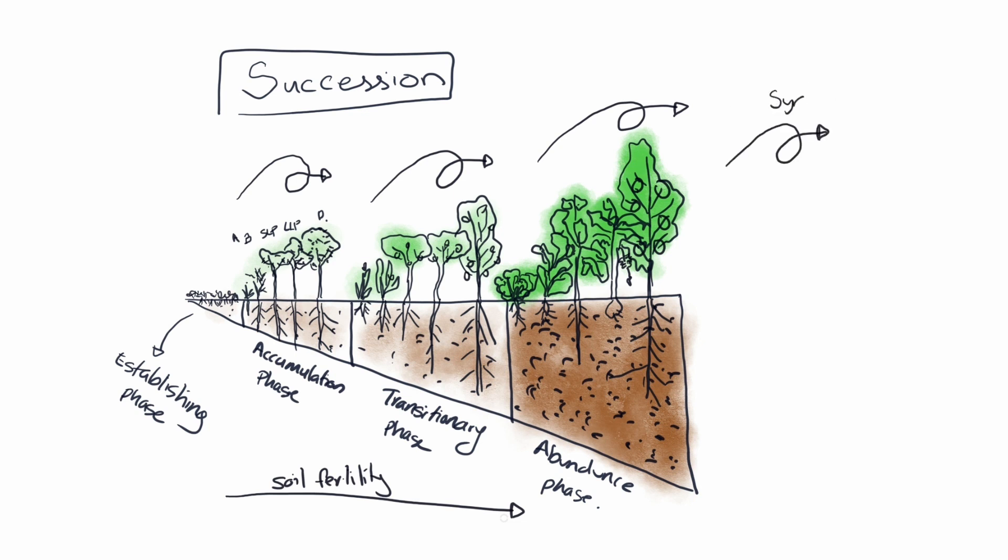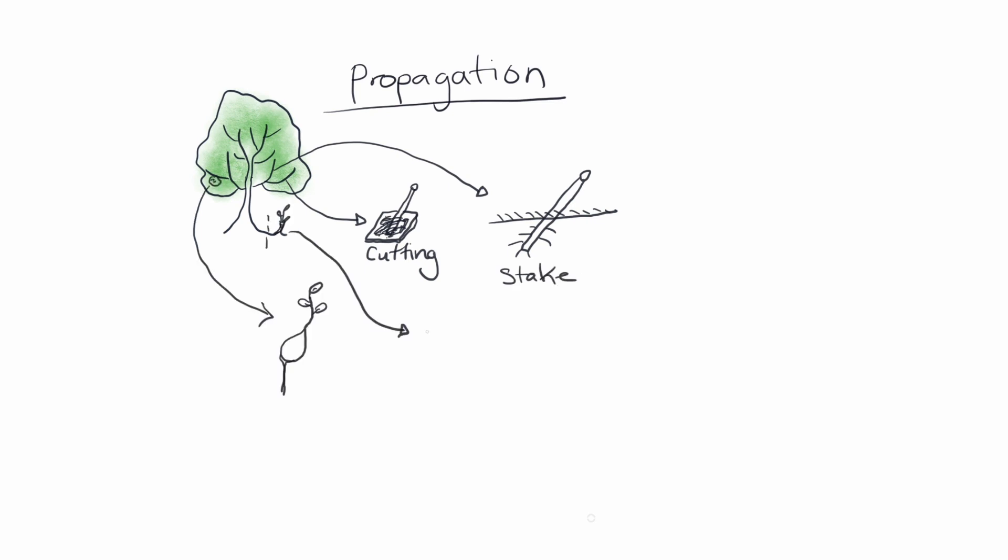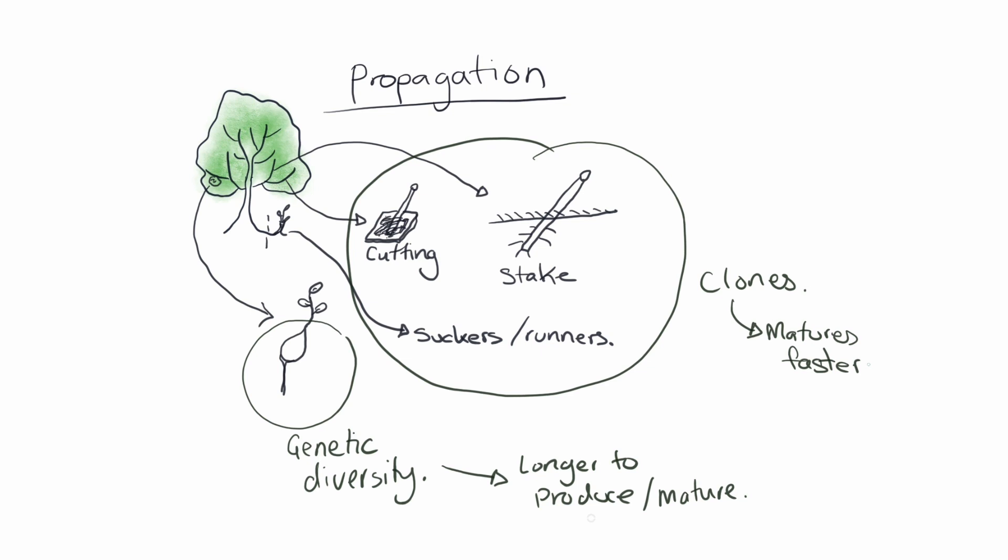The next category we want to look into is propagation. So we can either take cuttings, stakes, which we can push directly into the ground, root suckers or runners, or directly plant things via seed. When we plant things via seed, we have an increased genetic diversity. And we also increase, therefore, the resilience against diseases. When we propagate our plants via cuttings, stakes, runners or suckers, we are essentially propagating clones of that original tree, meaning that we don't have any genetic diversity. On the plus side, they reach maturity sooner. However, they don't form true tap roots as they would via seed.